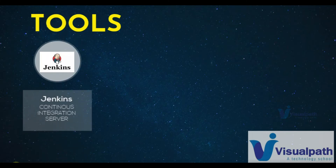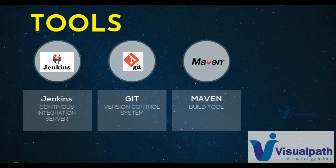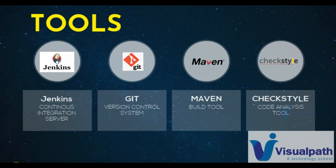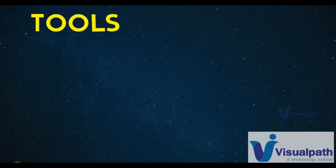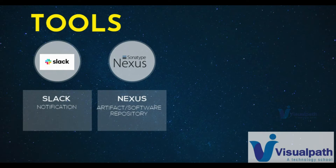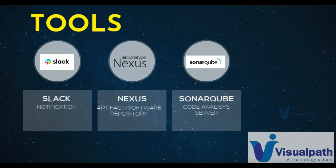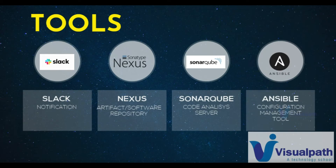We are going to use Jenkins for continuous integration and Jenkins will be integrated with all the tools. It will be integrated with Git where our source code is kept, and also Maven which will be our build tool. Checkstyle will do code analysis. For notification we'll use Slack. To store our software artifact we'll use Nexus Sonatype repository — for downloading Maven dependencies and for storing generated artifacts. For code analysis we're going to use a SonarQube server, which provides a dashboard, quality gates, and different rule sets.